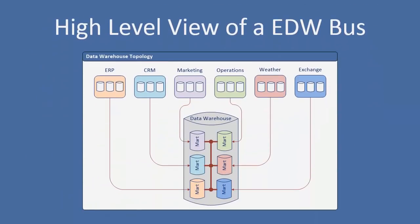Whenever we start this video series, we first try to define what the dimensional modeling technique is. But before we could do that, we had to define what a data warehouse is. This is a diagram we use to describe what the data warehouse topology looks like when we take a dimensional modeling approach. You can see we have individual subject areas across the top, each feeding into individual data marts, and those individual data marts plug into a bus, which then forms the whole data warehouse.